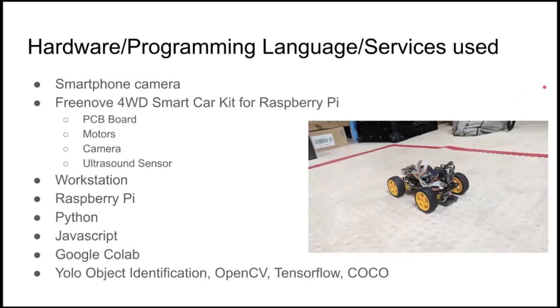These are some of the hardware programming languages and services and libraries that were used in order to code this Raspberry Pi car. We used a smart car kit that we found on Amazon. It had everything we needed in order to navigate any obstacles, which was a PCB board, motors, cameras, and ultrasound sensors. Our camera and the ultrasound sensor will be the inputs for all the data that the Raspberry Pi will be processing, which will then be sent to the motors to navigate throughout the map.